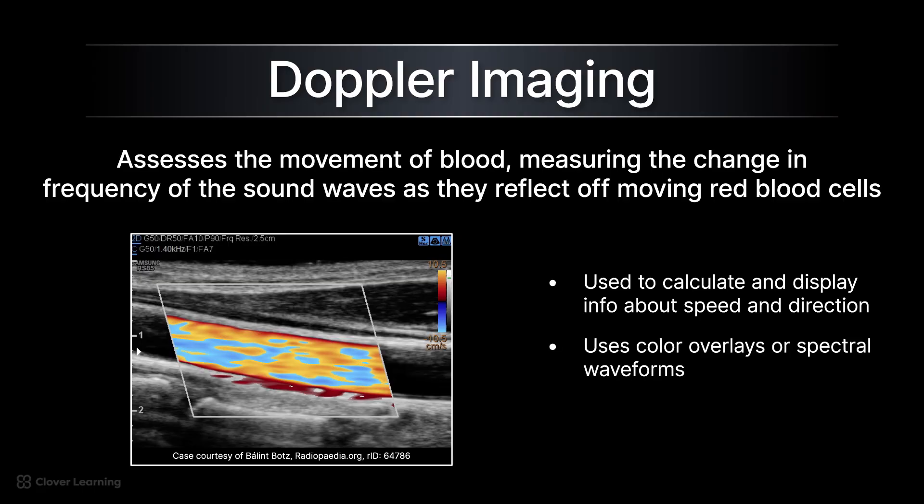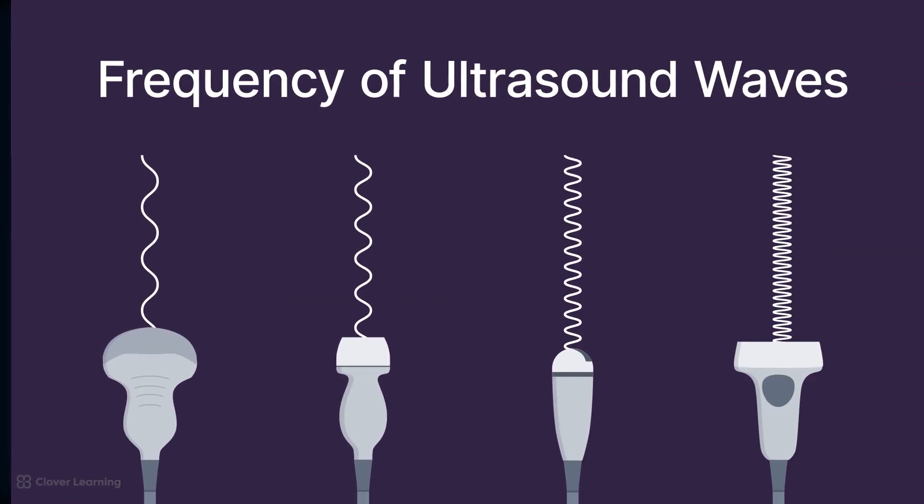While grayscale imaging shows shape, texture, and anatomy, Doppler imaging provides hemodynamic data, which is crucial in vascular and cardiac studies.